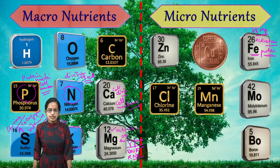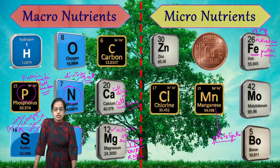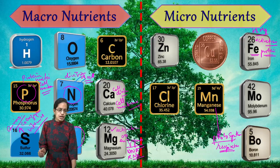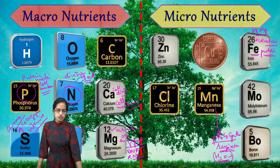The next micronutrient is manganese. Manganese is required for the process of photosynthesis, through which oxygen is released. It also plays a role in the process of respiration. Importantly, manganese is responsible for the splitting of water during photosynthesis — how water breaks apart in photosynthesis is attributed to manganese.